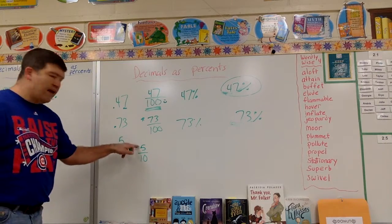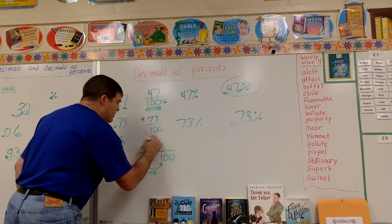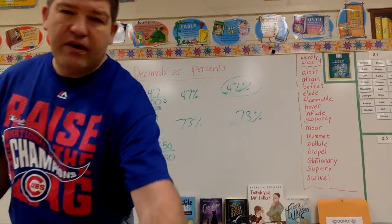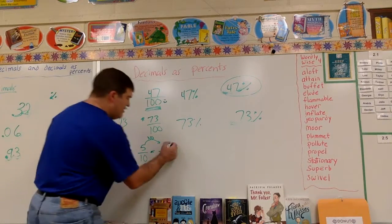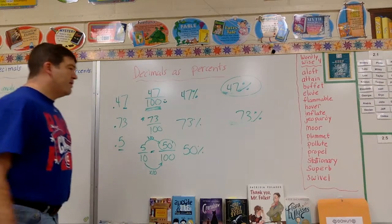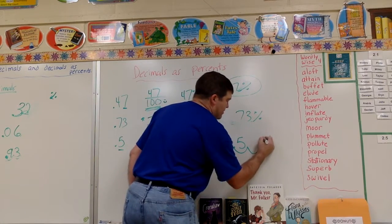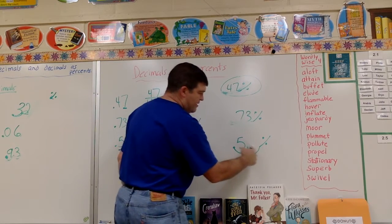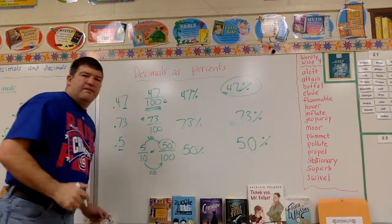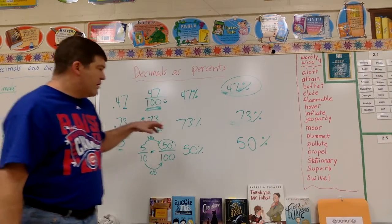For 0.5: that's 5 tenths, and the denominator is not 100, so it's not 5 percent. To fix it, I multiply top and bottom by 10 — 10 times 10 is 100, and 5 times 10 is 50 — giving me 50 over 100, so it's 50 percent. Using the shift method: move the decimal one, two places to the right. There's a spot for a digit there, so I put a zero, giving me 50 percent.